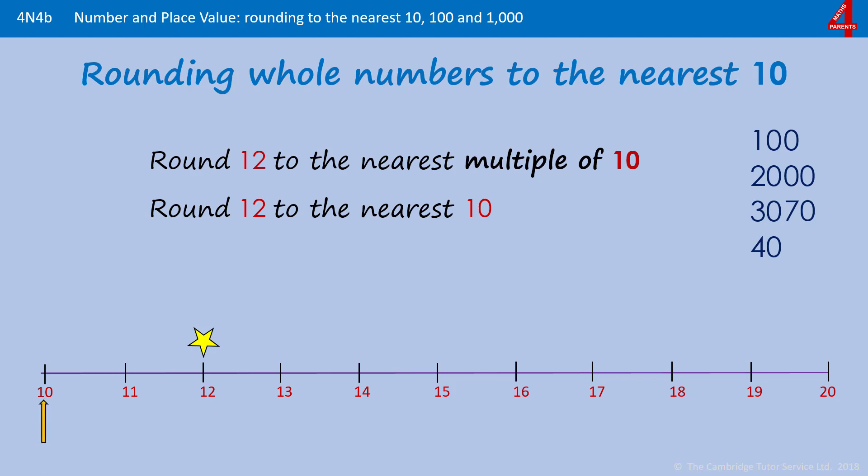Before 12 we have 10, and after 12 we have 20. So they're the multiples of 10 either side of the number 12, and you can see that 12 is nearer to 10 than it is to 20. So when we round 12 to the nearest 10, we get 10.